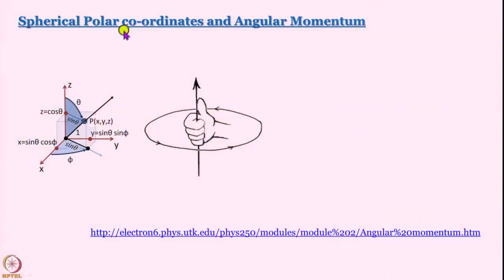Before starting our discussion of the hydrogen atom, it is important that we prepare ourselves. Today we are going to discuss a different coordinate system from Cartesian — that is, spherical polar coordinates — and also angular momentum. The question is why we need to work in spherical polar coordinates for a quantum mechanical description of angular momentum, which will become clear when we discuss the Schrödinger equation for the hydrogen atom.